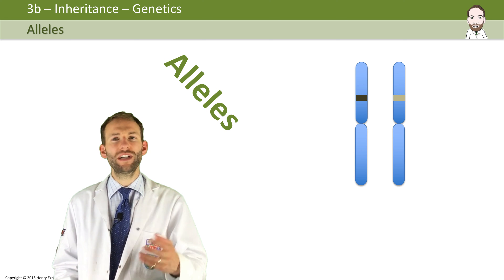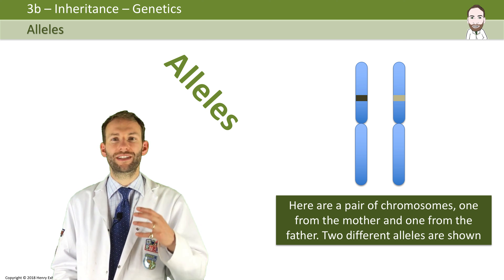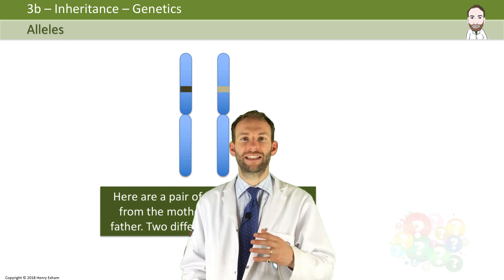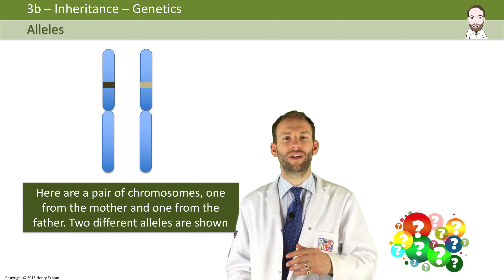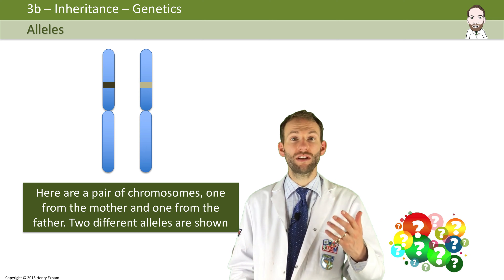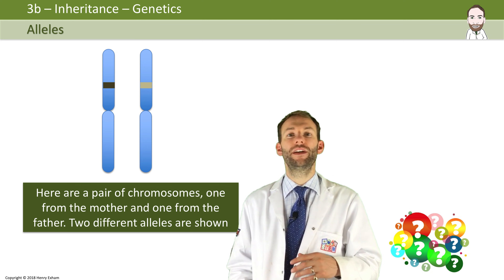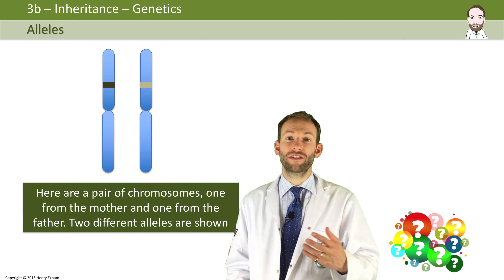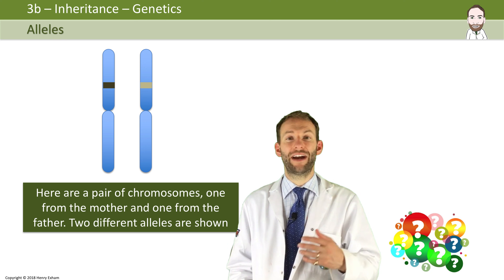Now, the question is: what characteristic will I get if I get one of each allele like this? Will I get a mixture? Well, that seems logical, doesn't it? But to answer that question, we need to learn more about how inheritance actually works.